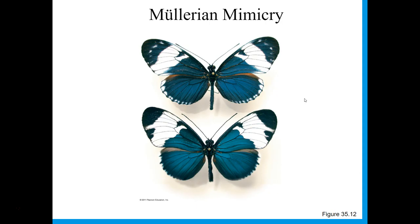It makes their toxicity more powerful if birds — or whatever is going to eat them — think: anytime I eat something that looks like this, it's going to make me sick. So that's Müllerian mimicry: two toxic species evolving to look more like one another.